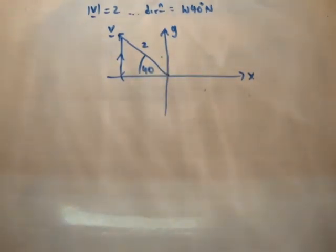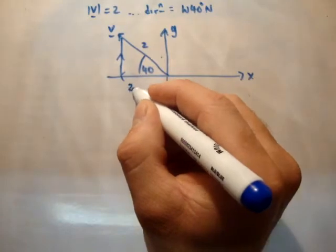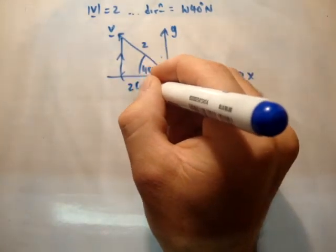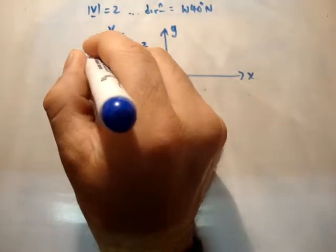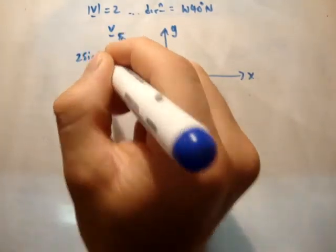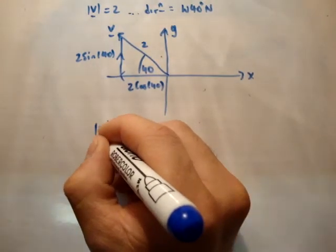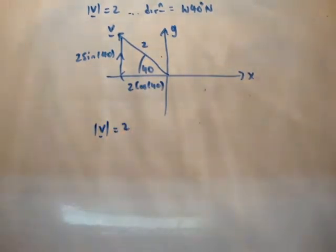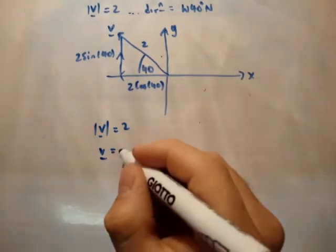So this vector here, in the i-hat direction, or negative i-hat direction, is 2 times the cosine of 40, because it is the adjacent side. And this one is 2 sine of 40, because it is the opposite side. That means the vector of v, its magnitude is 2 units. The vector of v is made up of 2 component vectors.